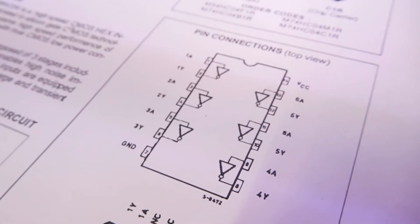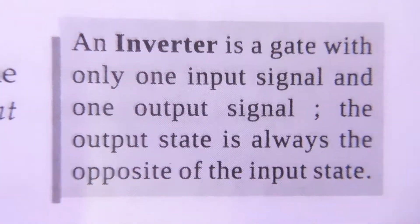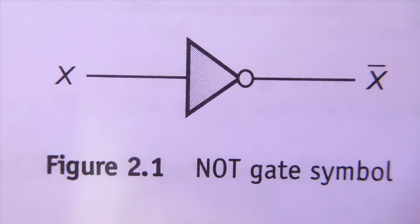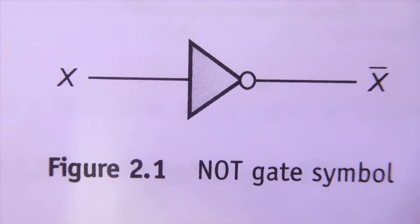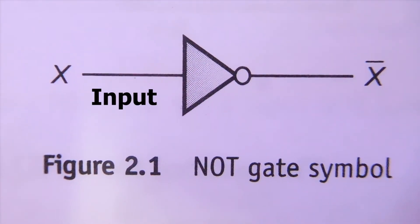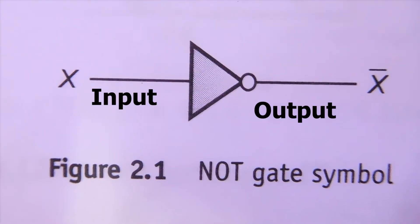In this video, we are going to discuss about NOT gate, also known as inverter gate. This is the symbol used to represent NOT gate in a circuit. It is a triangle with a small circle on one of its vertices. There is only one input signal and only one output signal in a NOT gate.